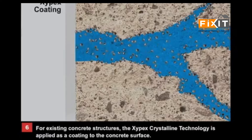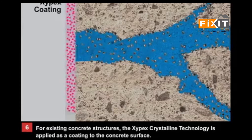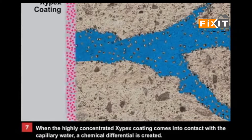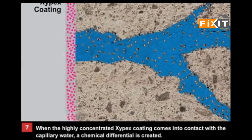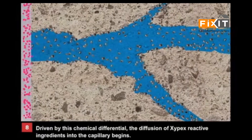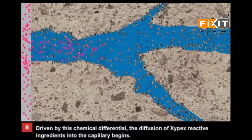For existing concrete structures, the Xypex crystalline technology is applied as a coating to the concrete surface. When the highly concentrated Xypex coating comes into contact with the capillary water, a chemical differential is created. Driven by this chemical differential, the diffusion of Xypex reactive ingredients into the capillary begins.